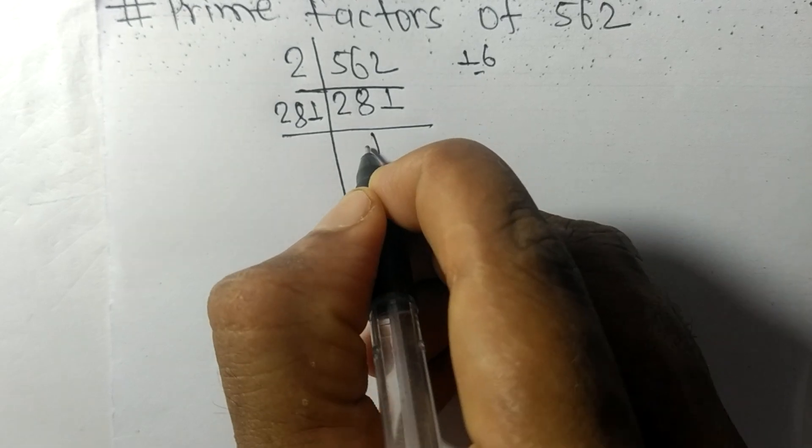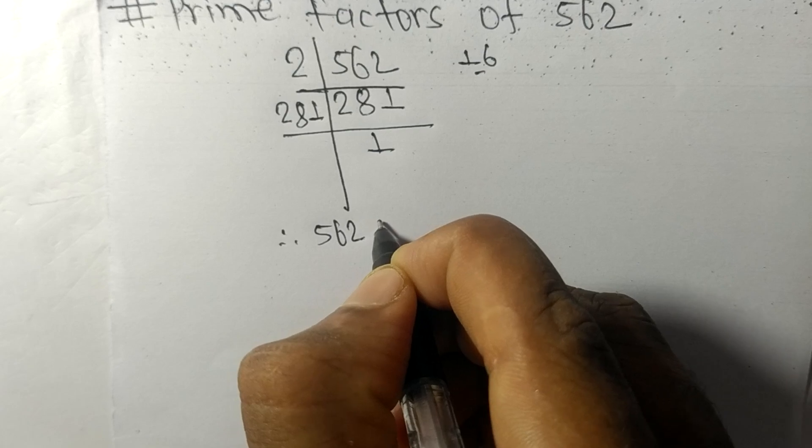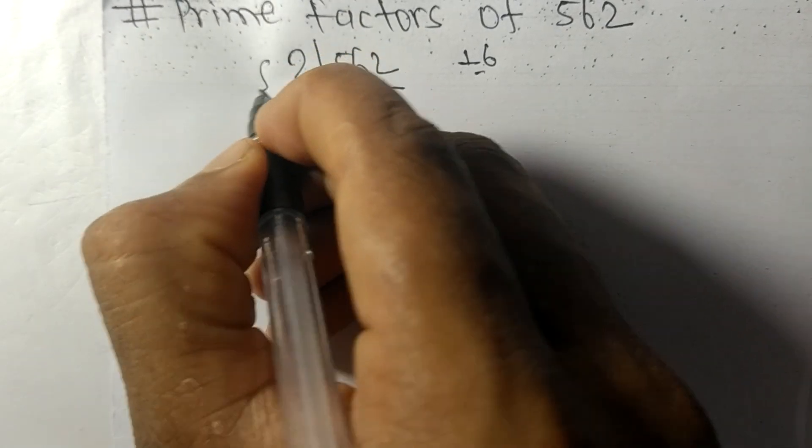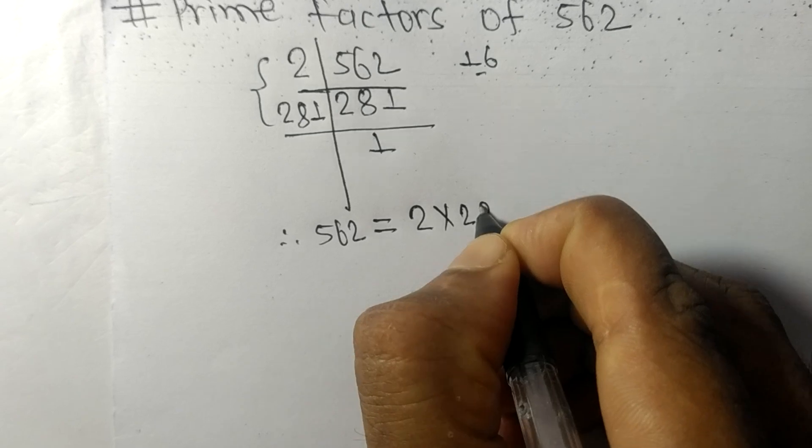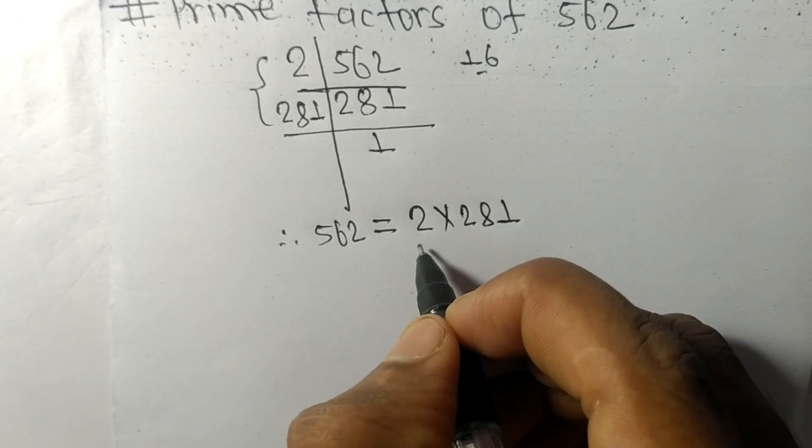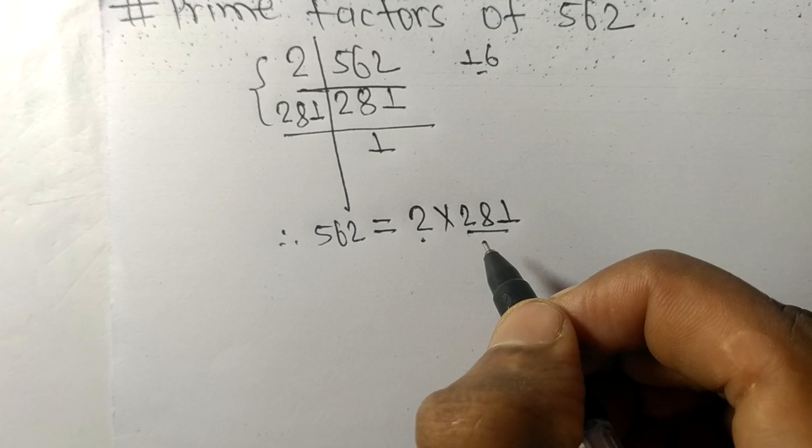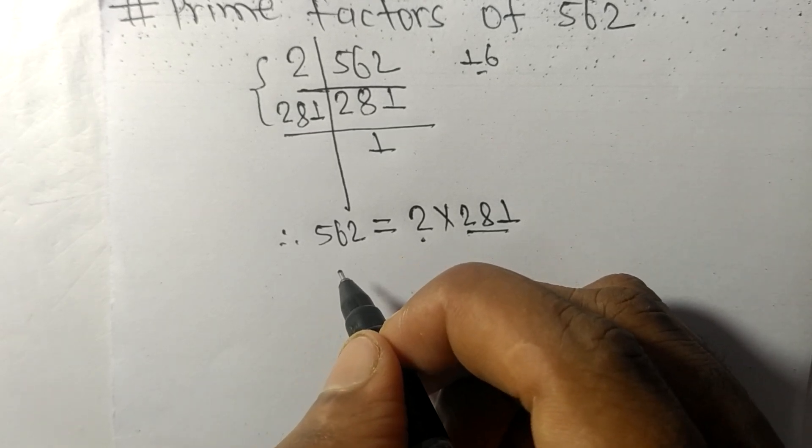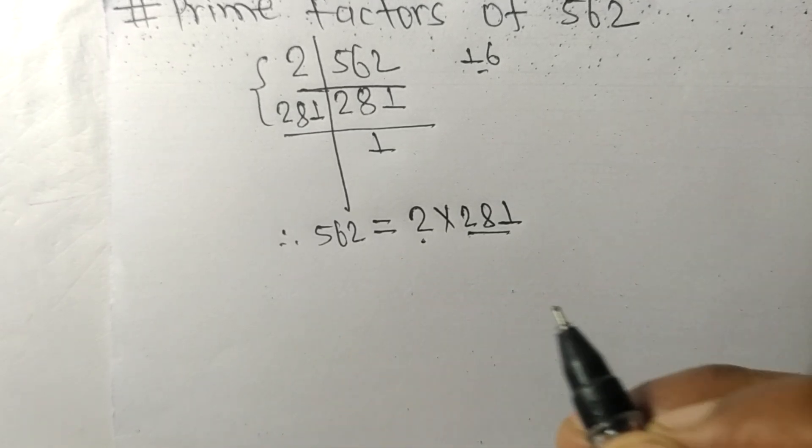And we get here 1. Therefore, 562 is equal to, from this side, it is 2 times 281. So 2 and 281 are the prime factors of 562. So this much for today and thanks for watching.